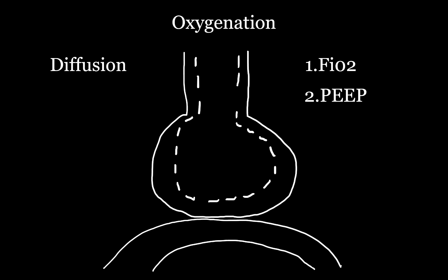This improvement in oxygenation by increasing inspiratory time works in two ways: first, by allowing redistribution of oxygen from highly compliant — more stretchy — alveoli to less compliant, stiffer alveoli; and second, by maintaining a larger surface area at end inspiration, allowing more time for oxygen to diffuse across the alveoli and into the capillaries. So increasing inspiratory time is one of the ways we can improve oxygenation.